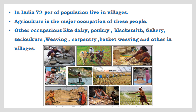In India, 72 percent of the population lives in villages, though this number has decreased in recent days. Agriculture is the major occupation of 70 percent of these people. Along with agriculture, other occupations include dairy, poultry, fishery, and sericulture — where silk threads are produced. We also find occupations like weaving, blacksmith, carpentry, and basket weaving in villages. Agricultural activities are totally dependent on rain.